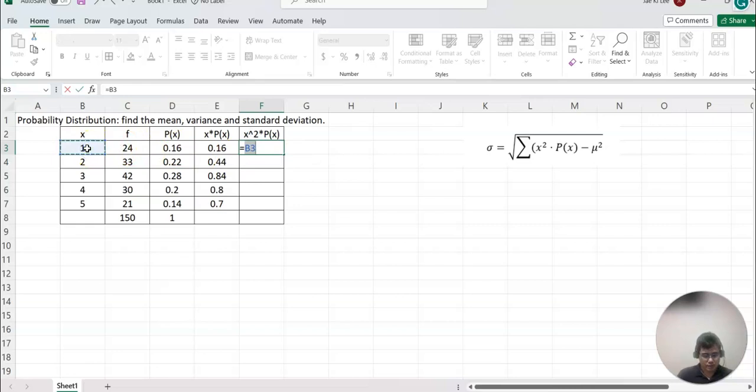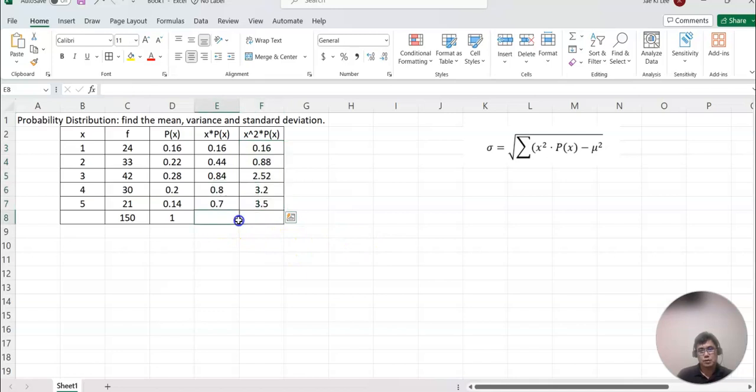So x squared times P(x). Then we need the sum as well. Highlight and select autosum. We'll be given the total sum for P(x), x times P(x), and x squared times P(x).